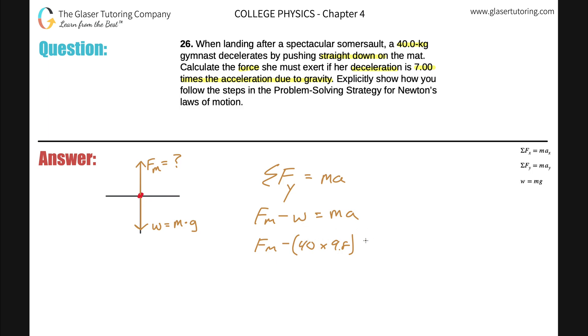That shall equal the mass, again 40 kilograms, multiplied by the acceleration. Now do we know the acceleration? It didn't tell it to us like on a silver platter, but it does say that the deceleration is seven times the acceleration due to gravity. So what is the acceleration due to gravity? 9.8. What would seven times that number be? Do the math - take out the calculator if you need - 9.8 times 7 is 68.6 meters per second squared.